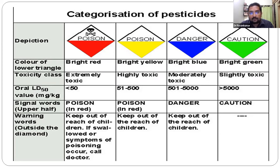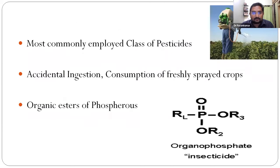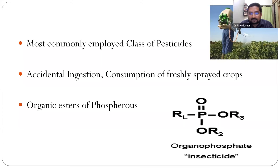There will be color depictions for all pesticides - red, yellow, blue and green - based on which the toxicity potential of pesticides can be determined by seeing the color combination on the bottles. The organophosphorus pesticide is one among various groups of pesticides and is the most commonly employed class. The mode of entry into animals is through accidental ingestion, majority of the time due to consumption of freshly sprayed crops, which leads to organophosphorus toxicity.